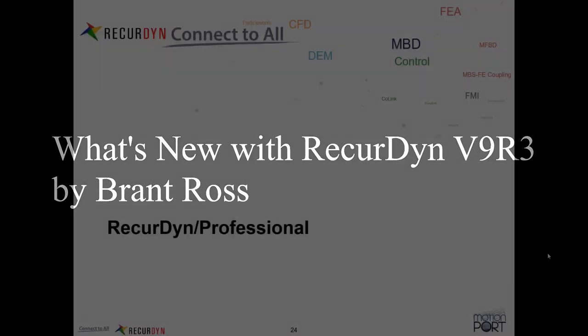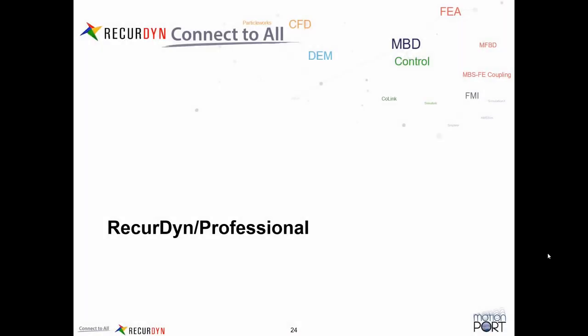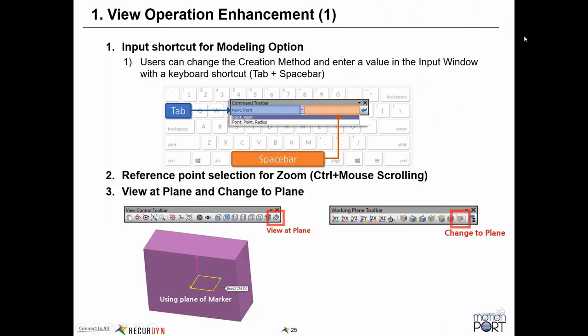Today's opportunity is to talk about the various enhancements to RecurDyn Professional and ProcessNet with RecurDyn V9R3. There's been a variety of enhancements to the graphical user interface, and we rely upon user feedback to give us ideas. Since we have users around the world, we're getting good feedback from many places and trying to apply it.